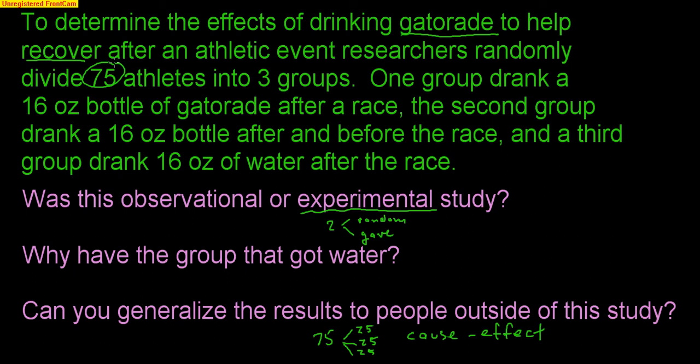Hopefully that is clear. Just a couple other aspects about this experiment. I do have replication, because I have 25 people in each group. 25 is a good solid number. As long as those 25 people are consistently showing me better results because they drank Gatorade, then I can show that this is cause and effect. I do have control. I'm going to assume that they all run the same race, the same distance.